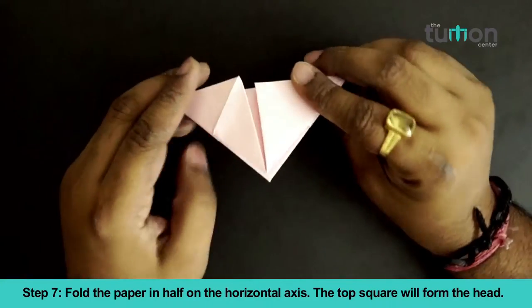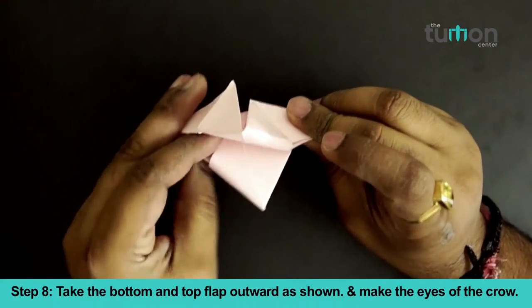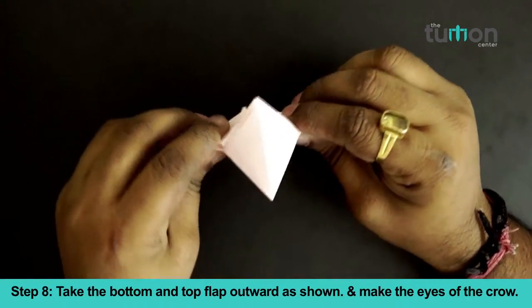Fold the paper in half on the horizontal axis. The top square will form the head of the crow. Take the bottom and top flap outward as shown.